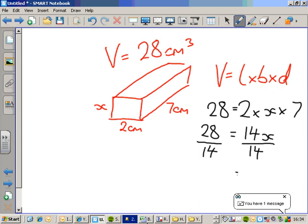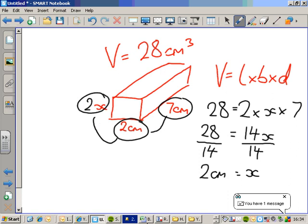Top work by year 8. 14 lots of x divided by 14, leaves me with 1 lot of x. And 28 divided by 14 on the left is 2, which means our missing side must be 2 centimeters. And let's check that. 7 times 2 is 14. 14 times the x is 2. 2 is 28. Bingo. Bob's your uncle. That's the other way in which you can use the formula to find the volume of the cuboid. You can use it to find the length of a, um, the unknown length of one of the sides.